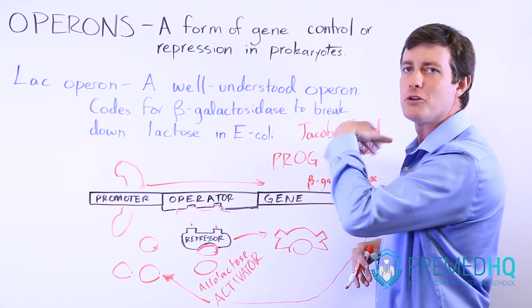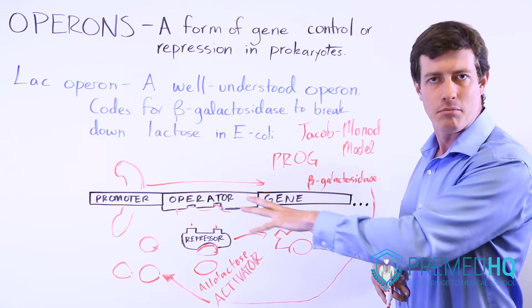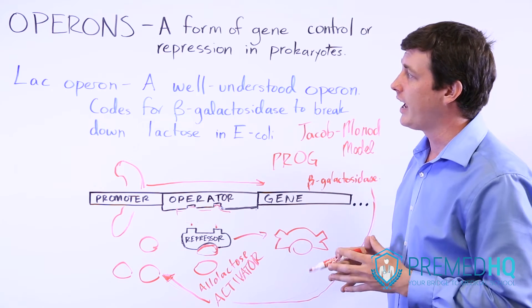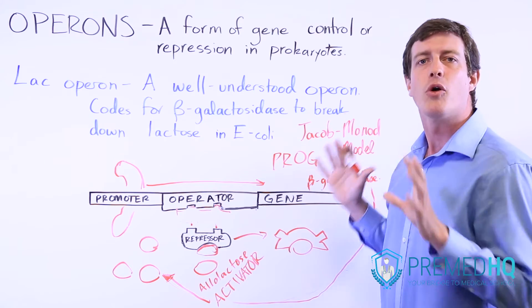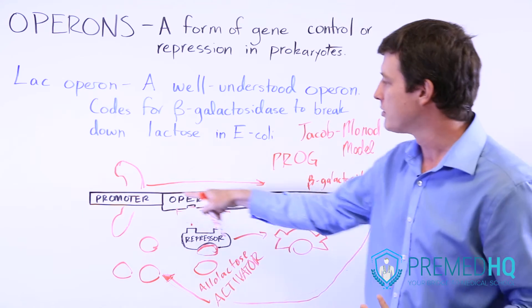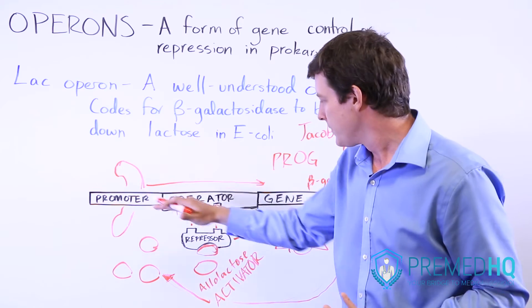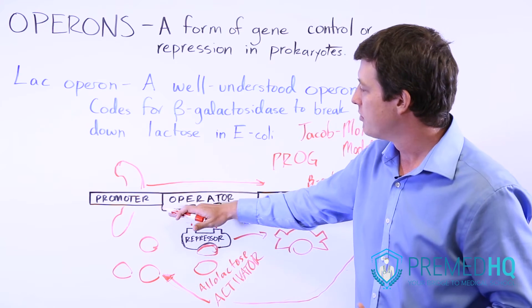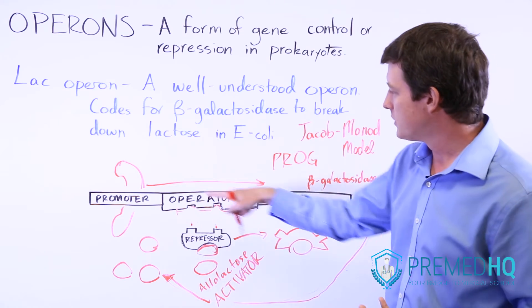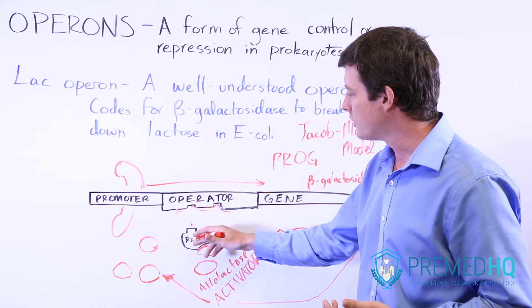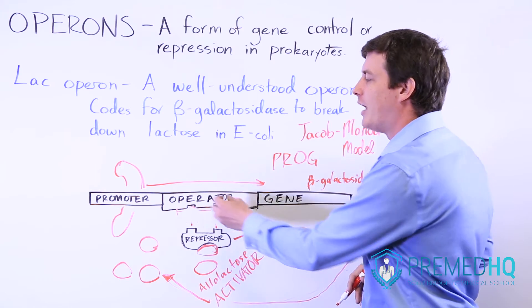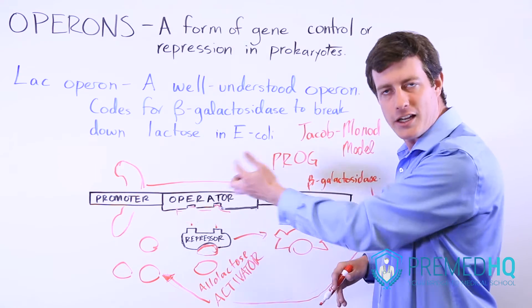The lac operon is the one you're most likely to encounter on the MCAT — it's a prototype for how all operons work. They have this PROG structure: the promoter region where the polymerase binds, the repressor which binds to the operator and stops the polymerase from moving, and then the gene. When the repressor is in the presence of an activator, it undergoes a conformational change that allows the polymerase to transcribe the gene.